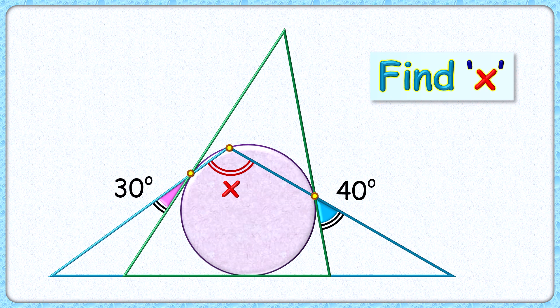Welcome everyone to this interesting question. Given to us is this green triangle with an incircle touching the three sides. Also given to us is this blue triangle which is sharing the same baseline as the green triangle and intersecting the circle at the point of tangencies of the other two sides. Given are this pink and blue angle, these are 30 degrees and 40 degrees.